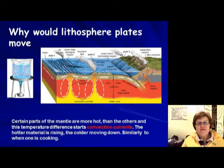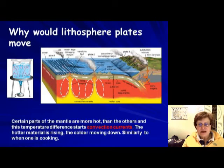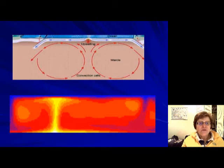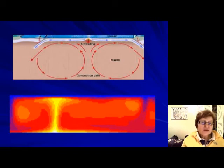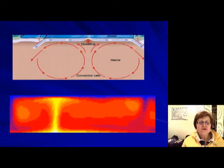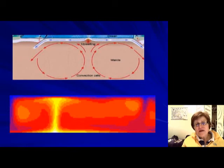So wherever it's hotter, material comes up; wherever it's colder, it goes down — those are convergent plate boundaries. On the animation, yellow represents warmer temperatures and blue represents colder. You can see the convection current moving, with the upwelling part and the downwelling part clearly visible.